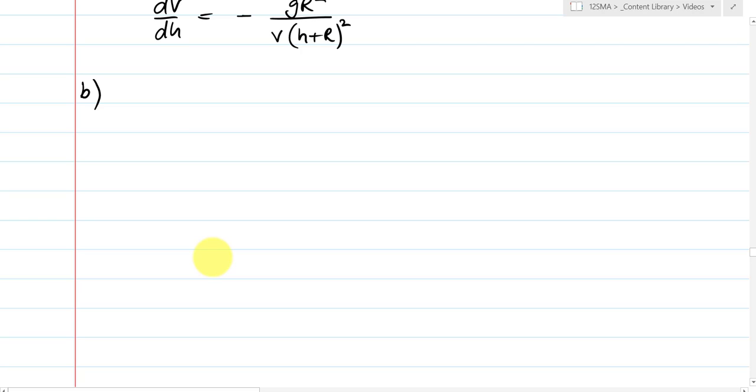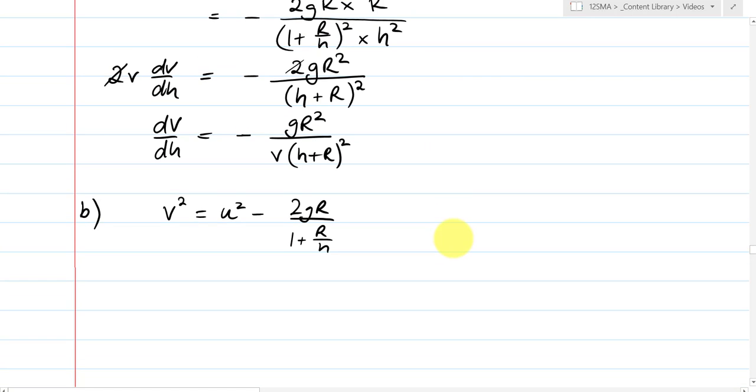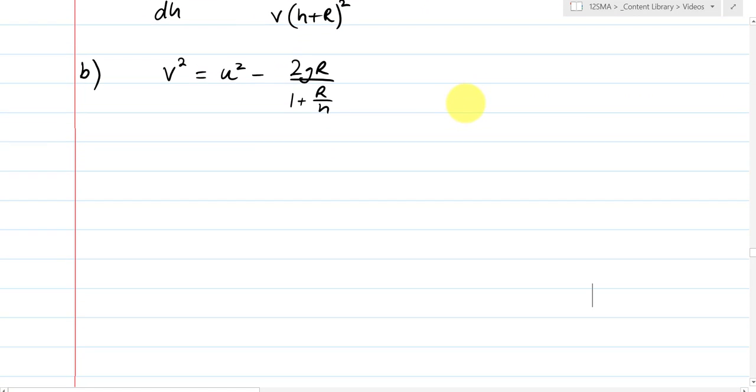So solving this now. I've got my solution to the differential. V squared equals u squared minus 2gr over 1 plus r over h. Now I'm going to just take into some consideration a couple of things. The question says hence determine the minimum launch velocity u for the probe to escape the planet's gravity.